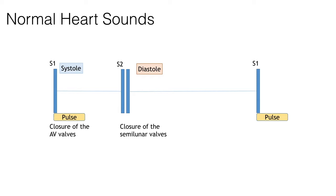When examining a patient it is good practice to palpate the carotid pulse whilst auscultating the precordium. You're doing this to determine which sound is S1, which is the heart sound that coincides with the pulsation of the carotid pulse. In this podcast I've put sound clips and animations so you can get a feel for what you might hear on auscultation. Starting off, this is the sound of a normal heart.